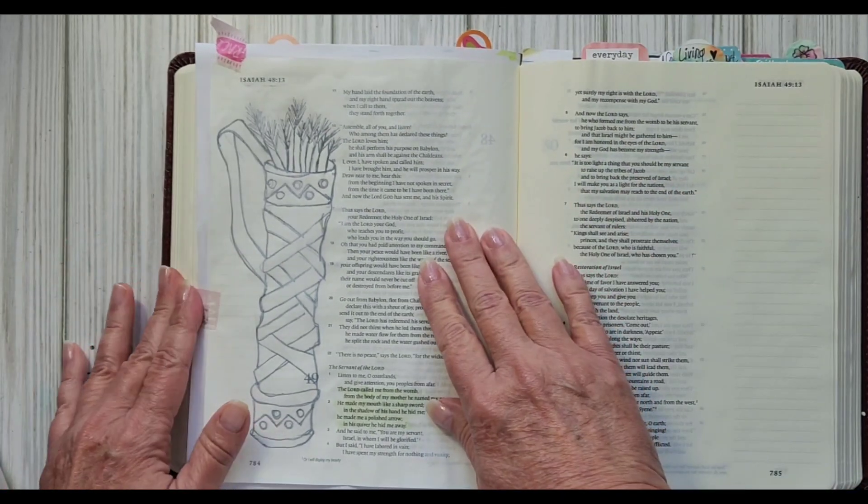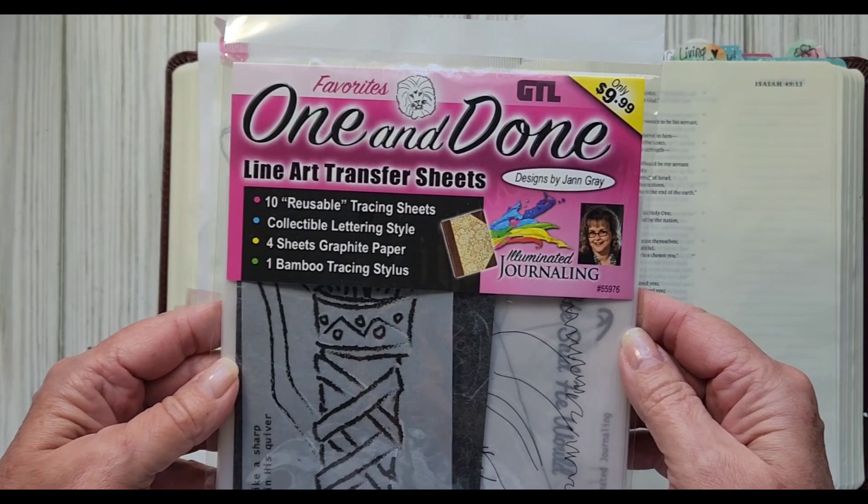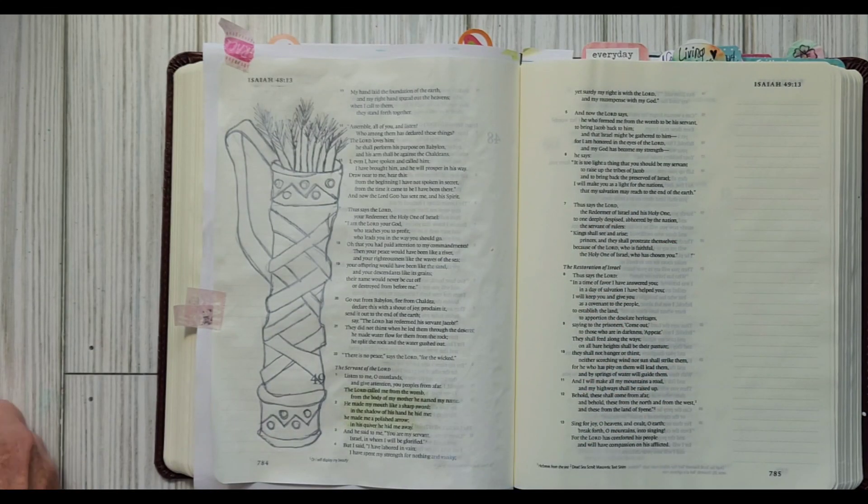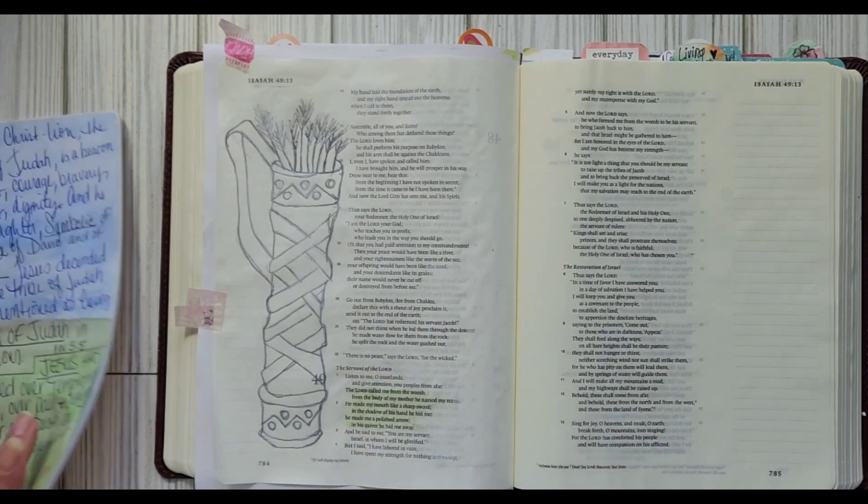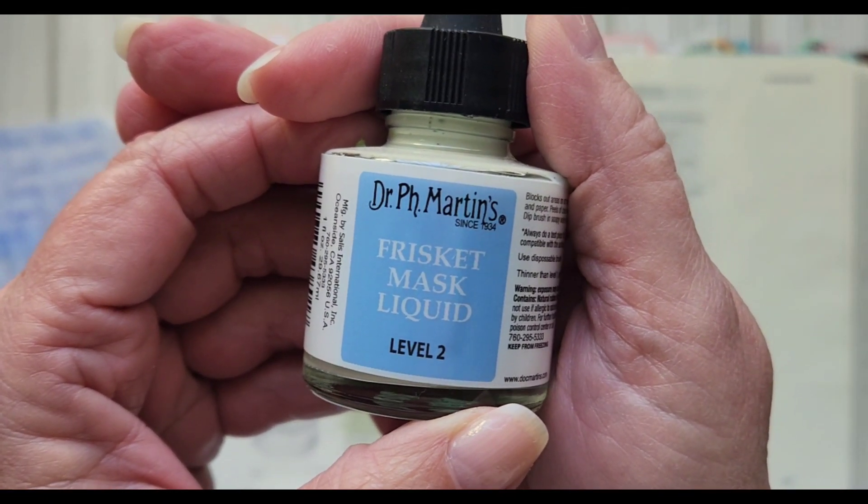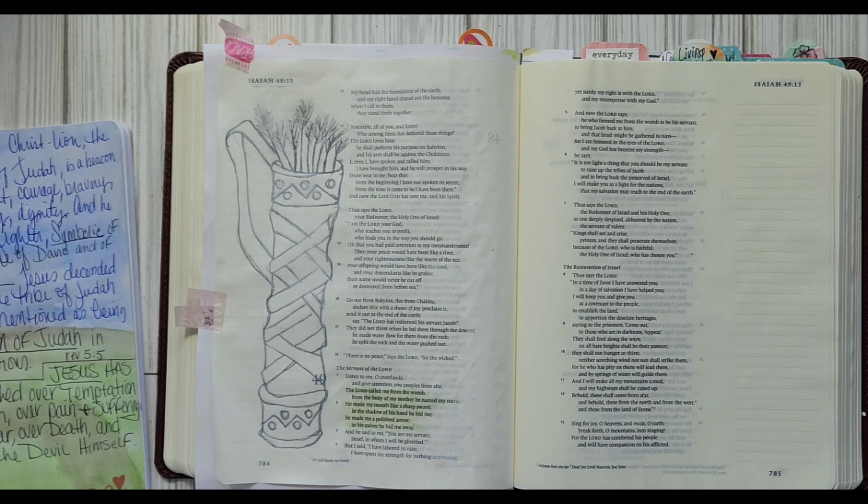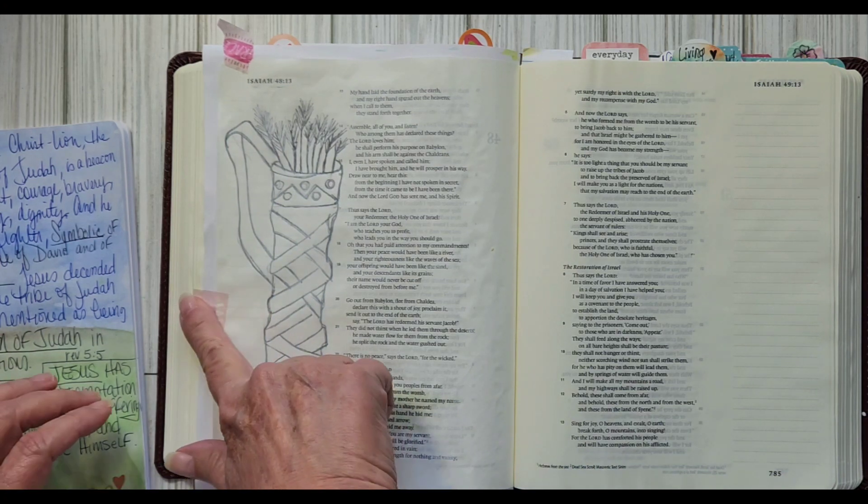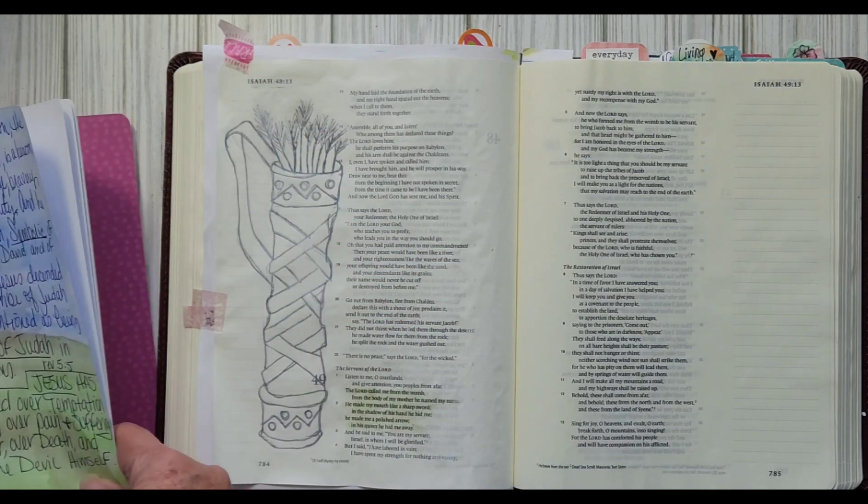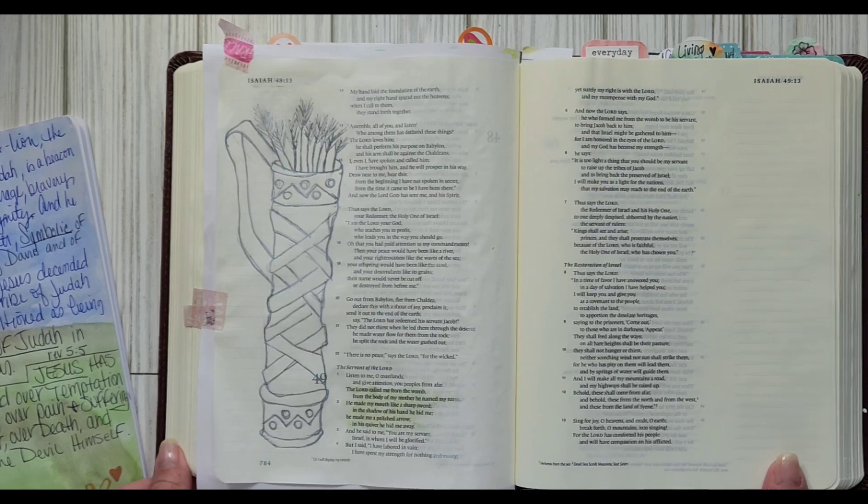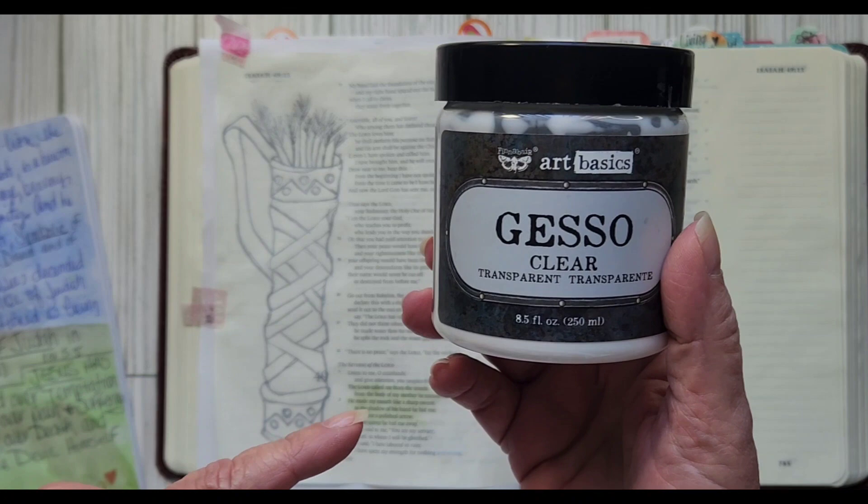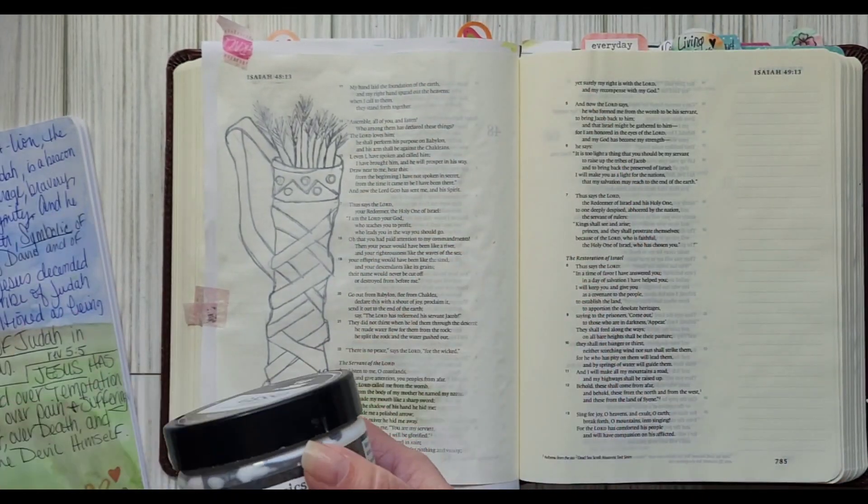I'm going to use the one and done line art transfer sheets and Isaiah. I have some masking fluid here, the masking fluid I use is Dr. P.H. Martin's, and it is quivers and bows.